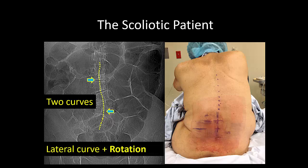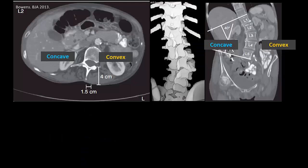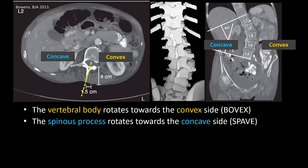The second thing to remember is that there is always a rotational element associated with the lateral curve. The vertebral body is rotated towards the convex side of the curve, and the spinous process is rotated towards the concave side of the curve. The best mnemonic I can come up with to remember this is 'bovex and spave' - and if anyone has a better one, please leave it in the comments.